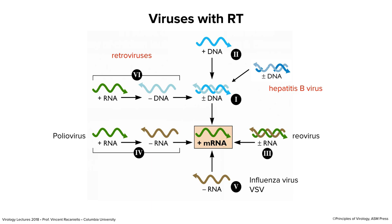Today we're going to talk about two different virus families that have reverse transcriptase as part of their reproductive cycle, shown here on the Baltimore scheme. The retroviruses take RNA and convert it to DNA. But we'll also talk about a DNA virus — hepatitis B virus — which has a funny double-stranded gapped molecule. You wouldn't guess it, but hepatitis B virus also has reverse transcriptase in its reproductive cycle. Both retroviral and hepatitis B virus genomes encode reverse transcriptase — not something you'd predict from the Baltimore scheme for hepatitis B.